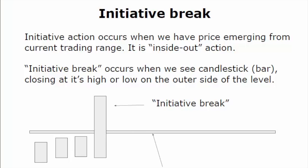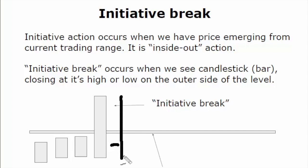First of all, we have to see initiative action beyond some important reference point or level. Initiative action occurs when price emerges from the current trading range — it is inside-out action. We see the price getting away from value, getting away from the trading range. An initiative break occurs when we see a candlestick or bar closing at its high or low on the outer side of the level, as shown on this slide. In most cases, you expect to see preliminary action with reduced volatility — a sequence of doji bars and doji candlesticks, maybe two or three hours of consolidation before the market breaks. If you see a candlestick with a shadow, it doesn't mean you have an initiative break, because in that case you have pretty aggressive responsive action.